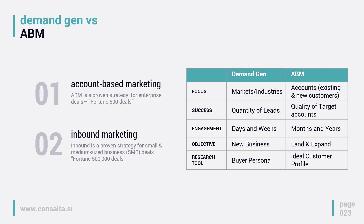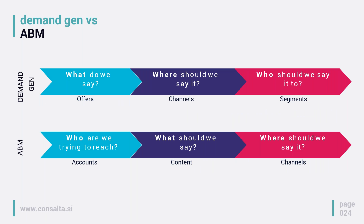The underlying research tool for demand gen is the buyer persona. For ABM it's the ideal customer profile — a broader perspective on the company and how we want to target it. With demand gen, we usually start with what we want to say — what is our offer — then we find the right channel and segments to communicate it. With ABM, it starts with who — who are we trying to reach, what would be the best channel to reach this person, what should be the right message to address this person, and then what should be the right channel to use. That's the main difference.